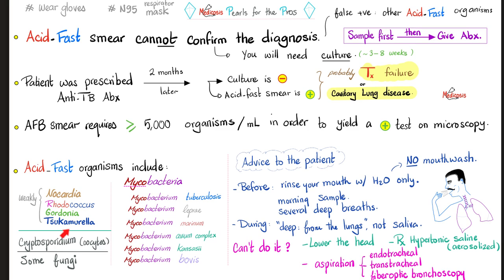Don't forget the weakly acid-fast bacteria: Nocardia, Rhodococcus, Gordonia, and Tsukamurella. Some tidbits for the patient: before you give me the sample, make sure it's a morning sample — same as for urine samples. Why? Because in the morning you are the dirtiest you'll ever be, giving the lab all kinds of findings. This increases the chance that we will find tuberculosis and make the correct diagnosis.